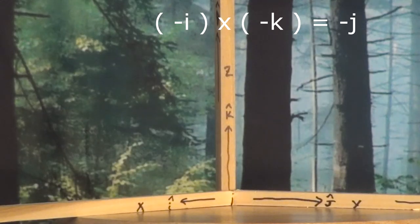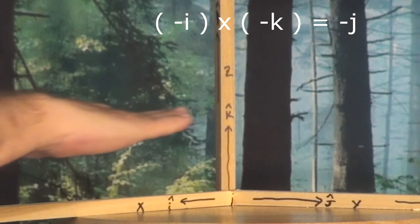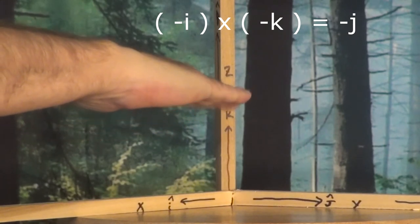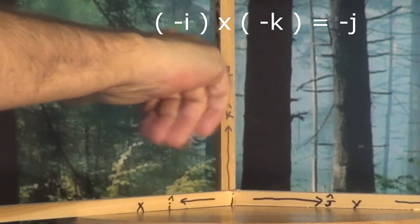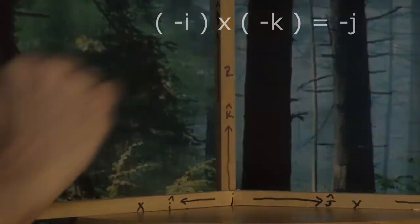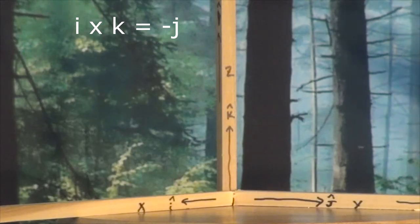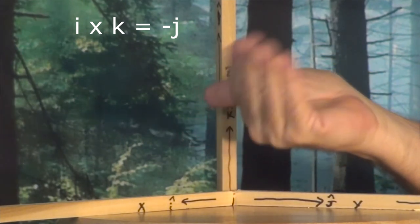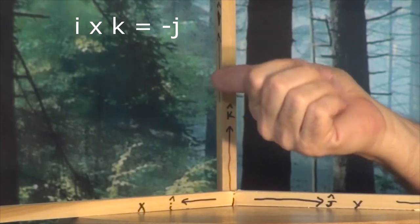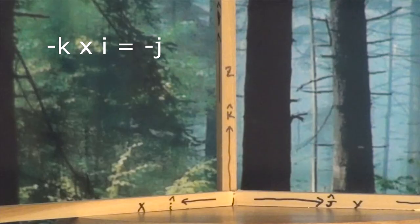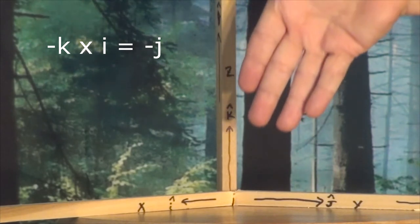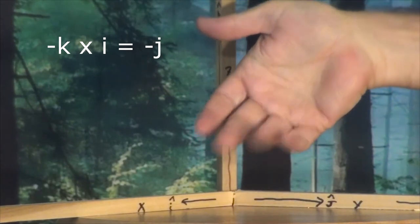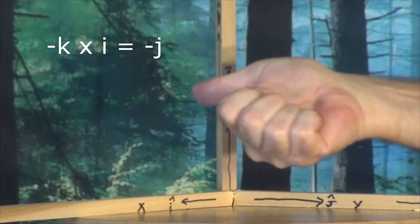For minus X cross minus K, fingers in the direction of the negative X axis, curl them toward negative K, and the thumb points in the minus J direction. For I cross K, put our fingers in the direction of I, curl toward K, and our thumb points in the minus J direction. For minus K cross I, fingers in the minus K direction, curl toward I, and our thumb points in the minus J direction.